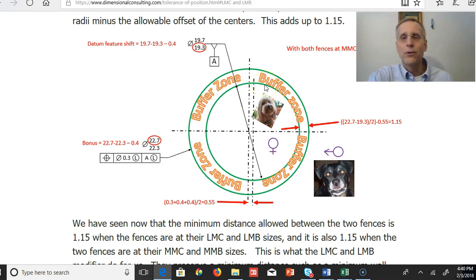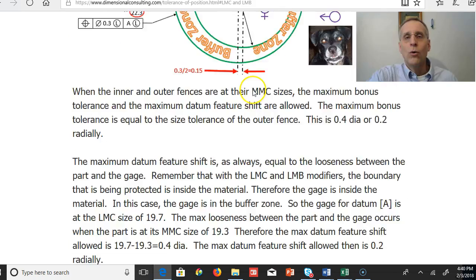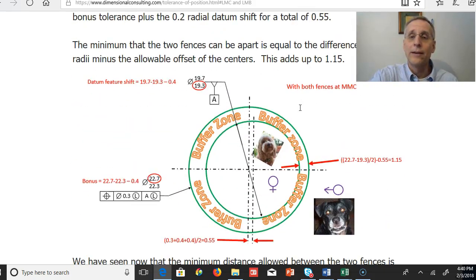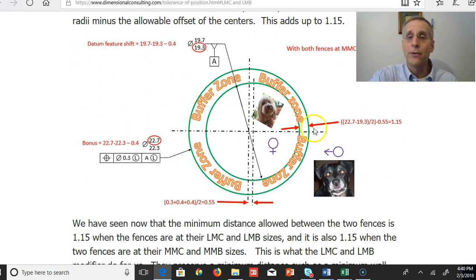So kind of the overall way to think of this is when this one is the biggest and this one is the smallest, they can move this far. And then as this one gets smaller and this one gets bigger, well, this distance would get larger, but then they can be offset from each other more to account for that. But it'll always work out so that it will never end up with a distance less than 1.15.